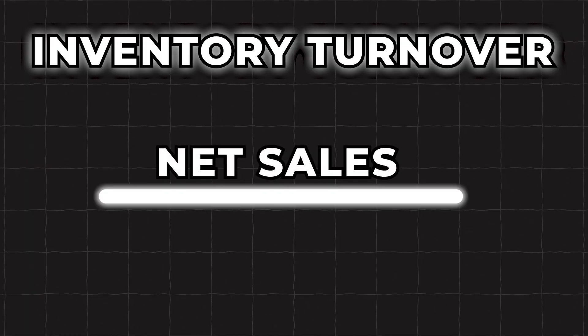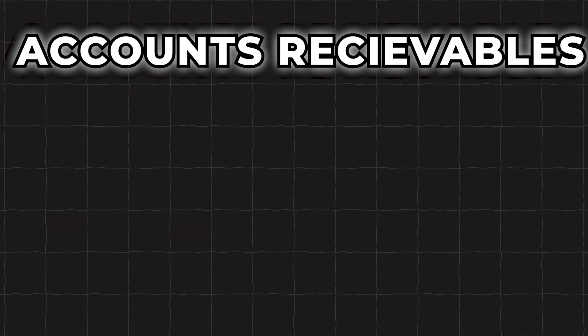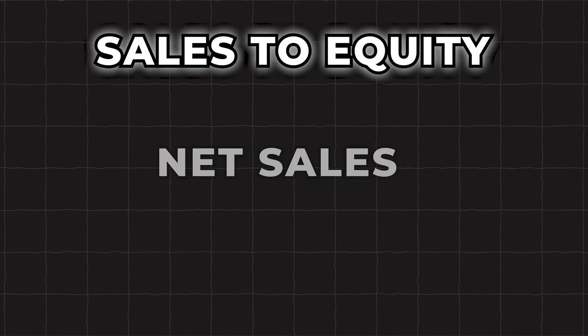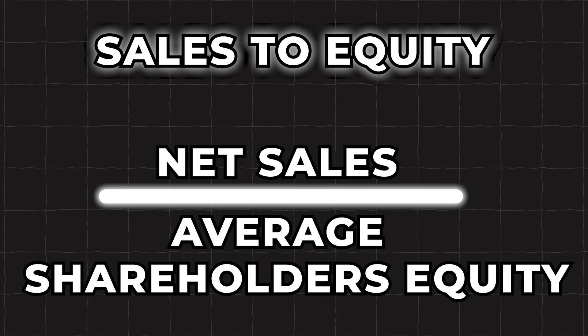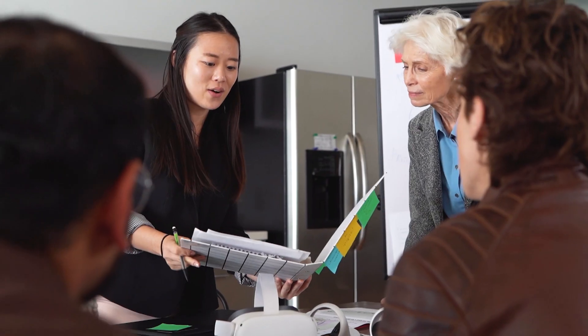Whilst ROCE touches efficiency, there are several efficiency-specific ratios which will give you a better analysis. These include: the inventory turnover ratio, which is the number of times a company sells out of its stock within a given period; the accounts receivable turnover ratio, which measures how efficient the company is at revenue collection; and the sales-to-equity ratio, calculated by dividing net sales — found by subtracting sales returns from gross sales — by average shareholders' equity, which measures the company's ability to use shareholders' capital to generate sales.